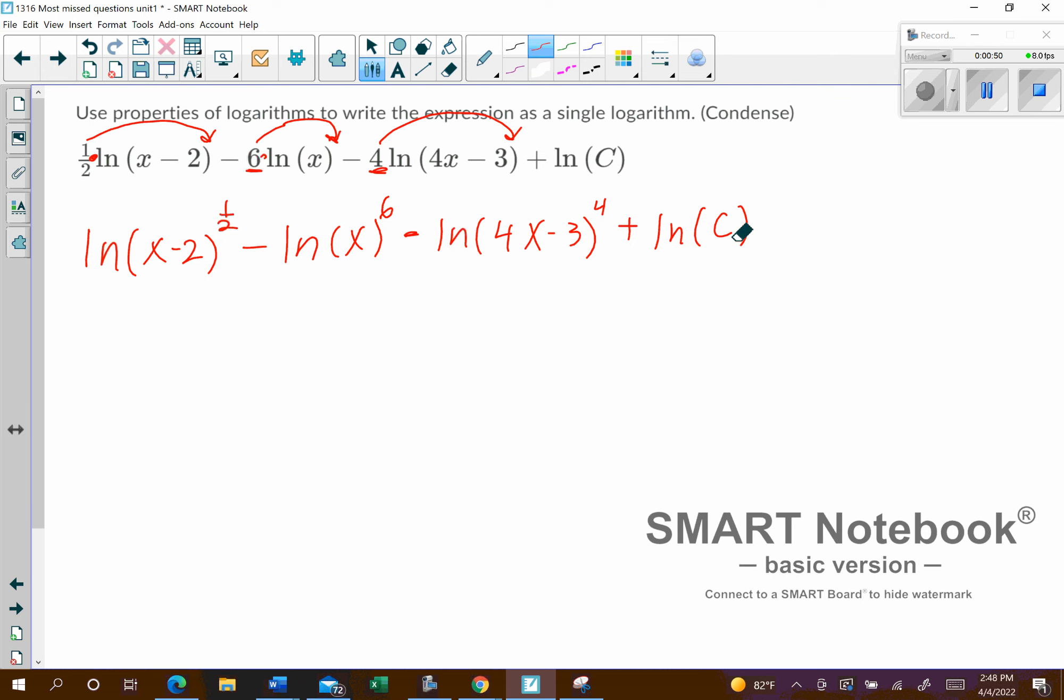Okay, so then whenever you have a fractional exponent, you'll actually need to go ahead and write that as the square root. So this is going to be the natural log of the square root of x minus 2.